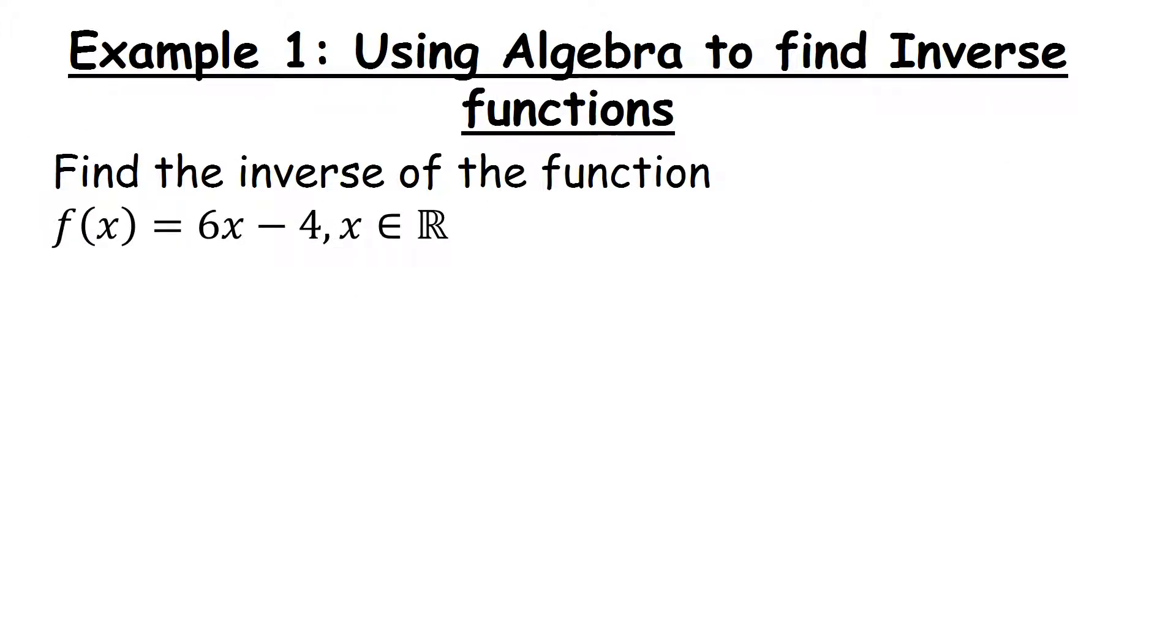Let's take our first example using algebra to find inverse functions. We've been given this function f of x defined by 6x minus 4. Our first step is to replace f of x with y, so we have y equals 6x minus 4. What we're trying to do is get the x on its own.